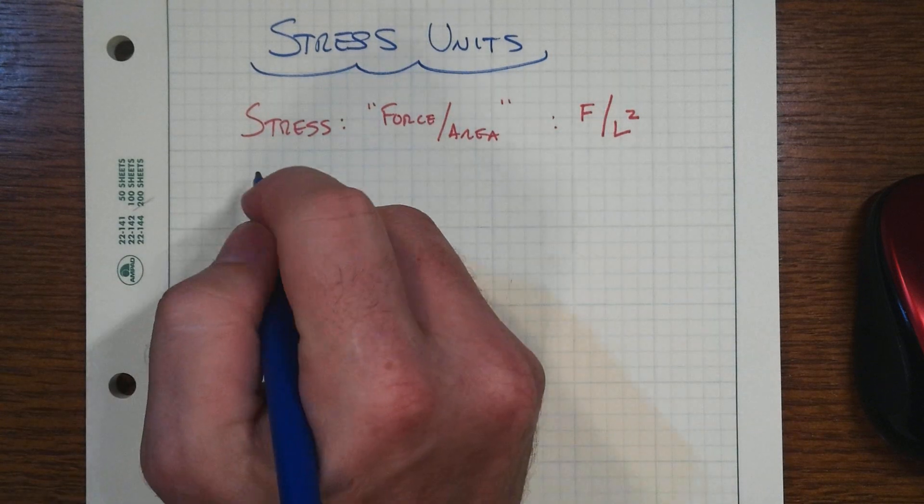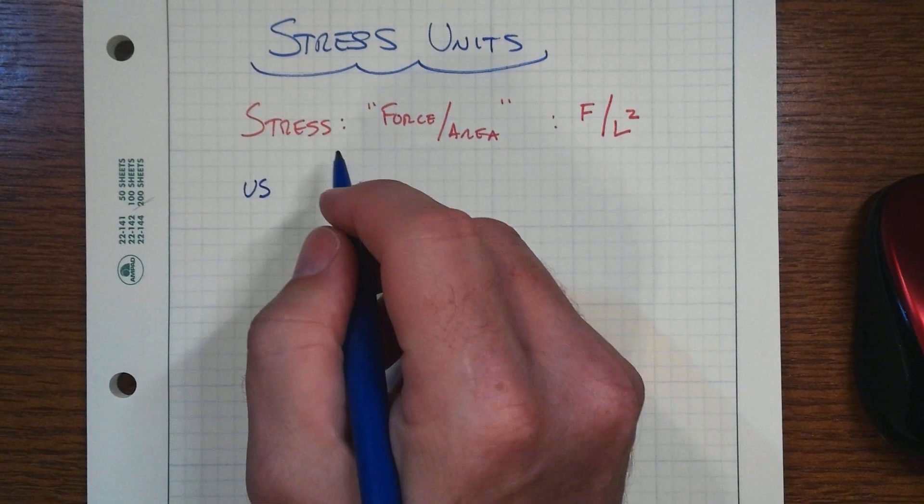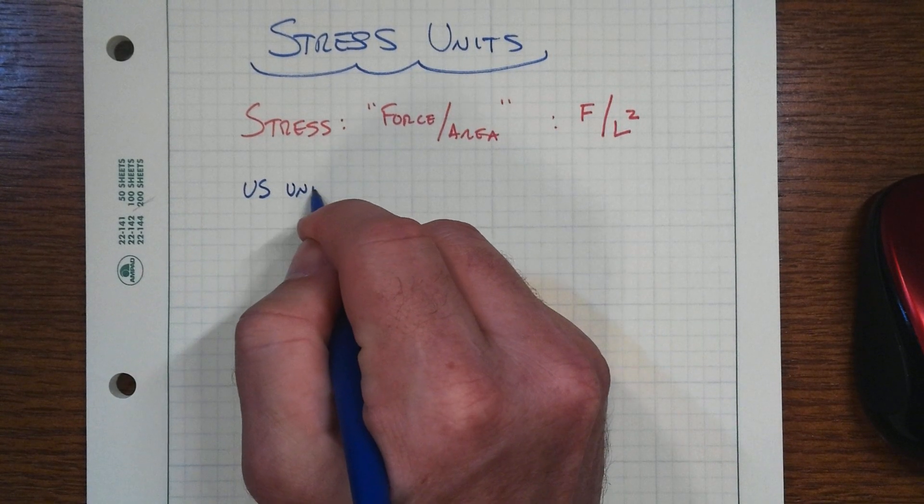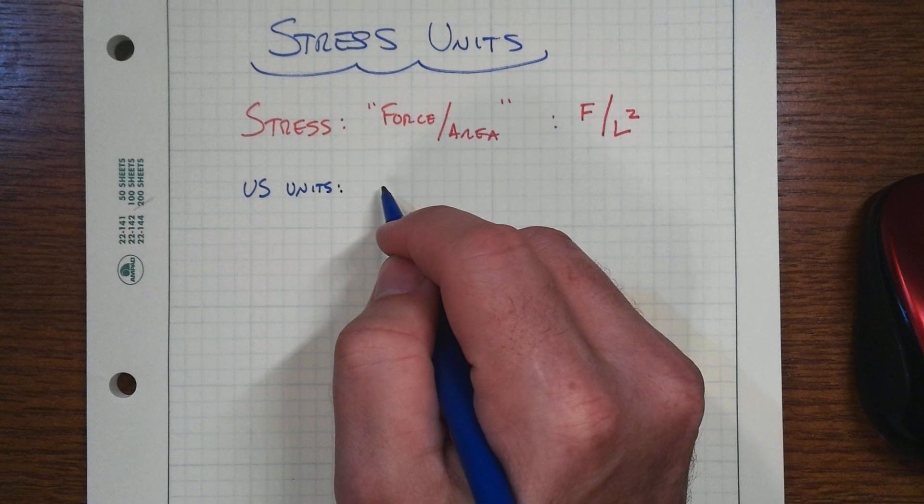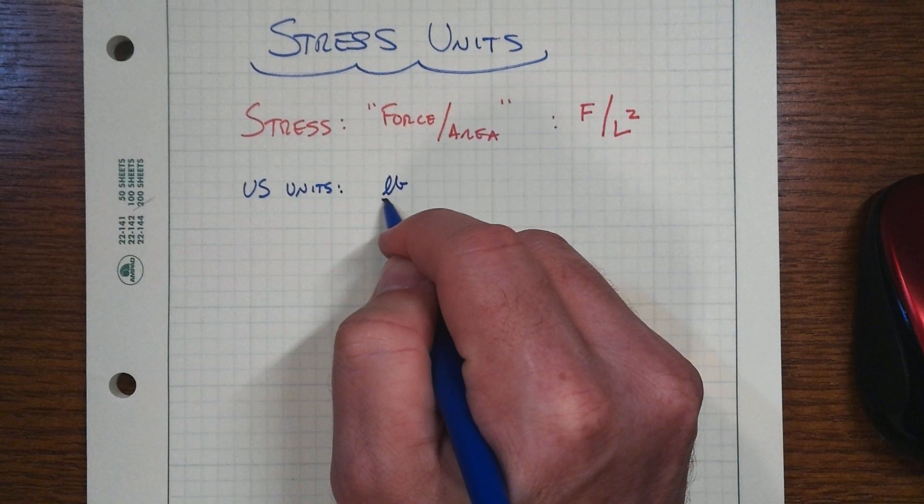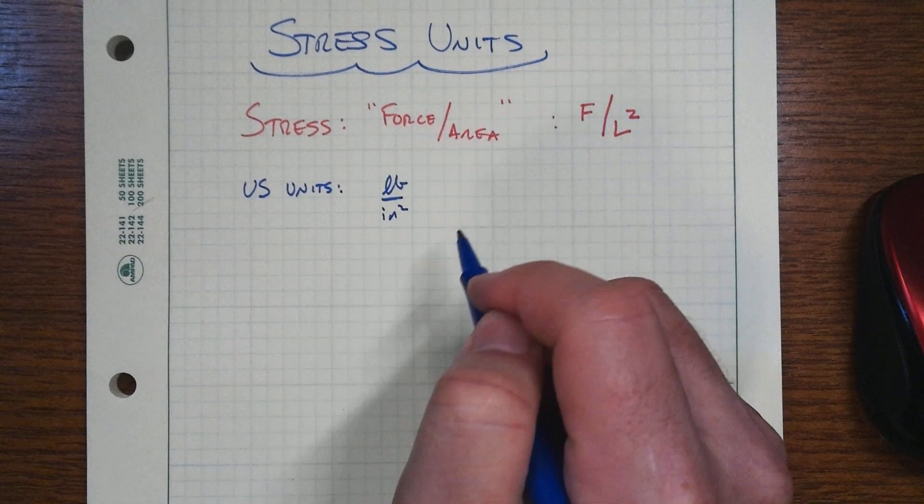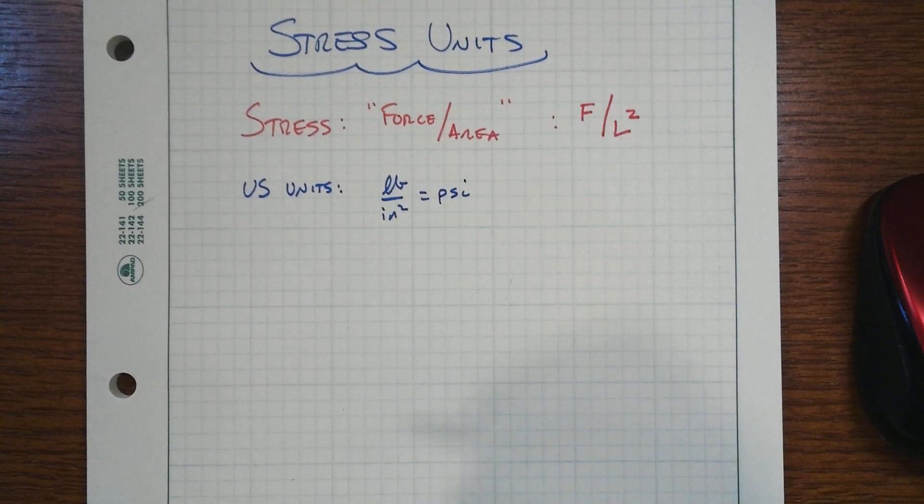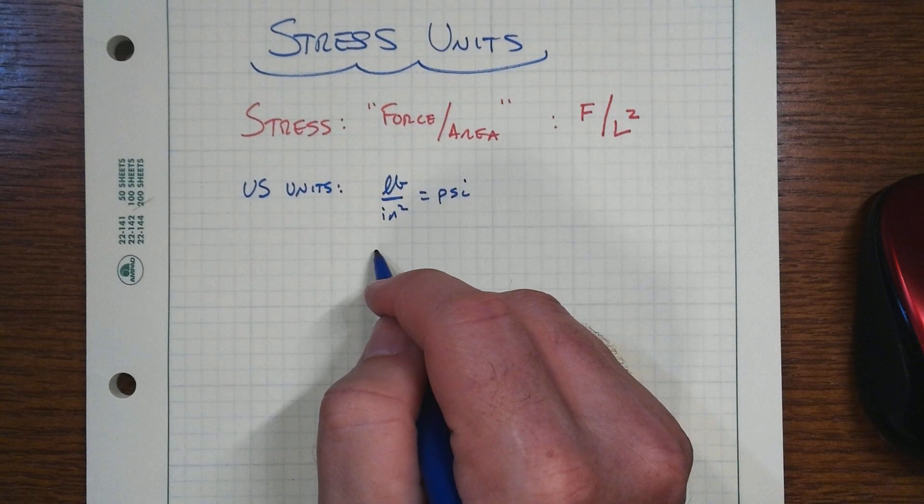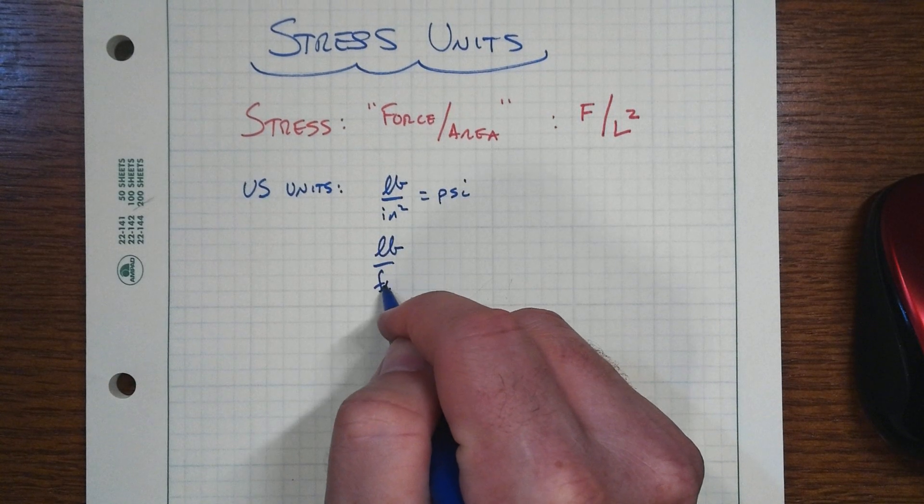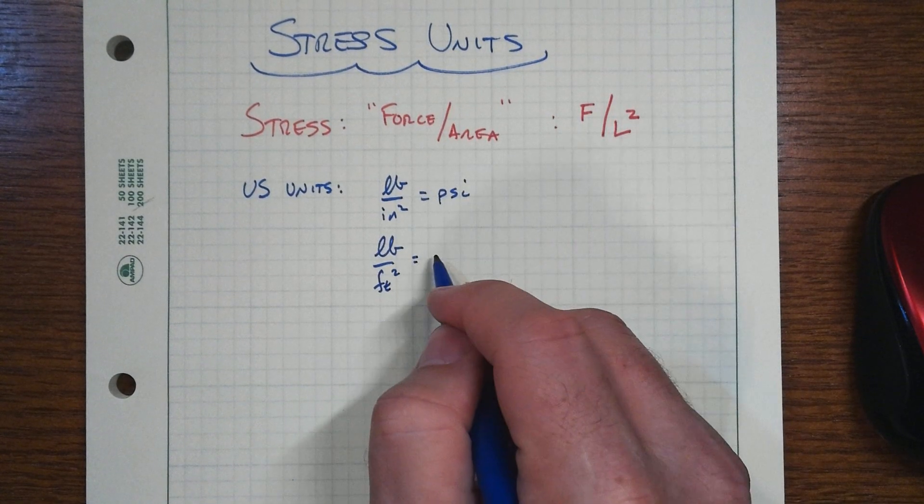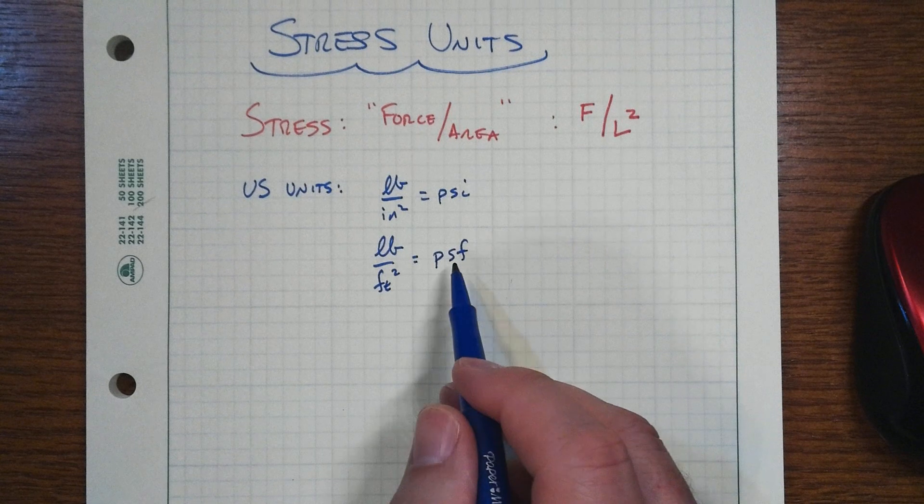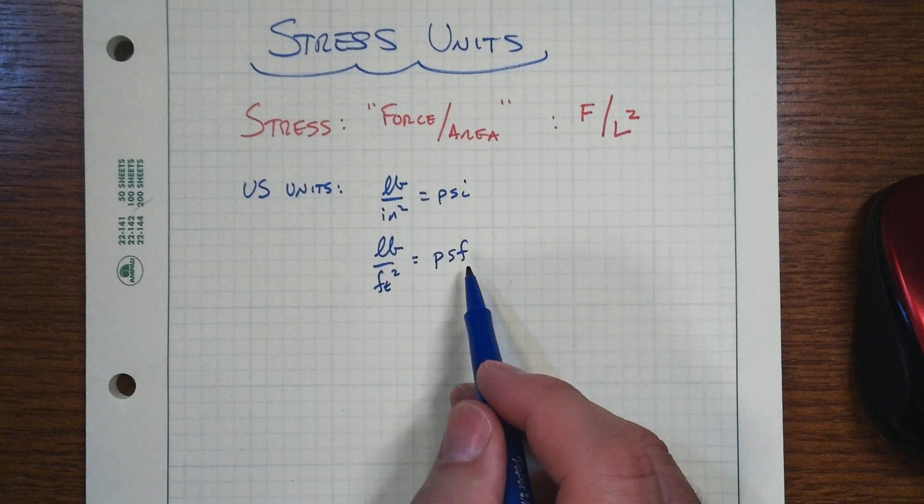So let's look at first U.S. units and the typical ways we might be describing that, such as pounds per square inch, which is oftentimes abbreviated as PSI or pounds per square foot, also common, which would be PSF.